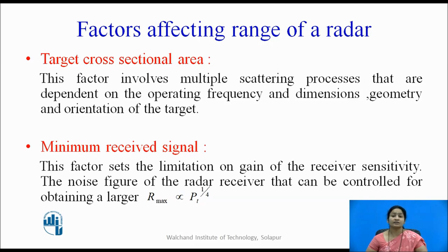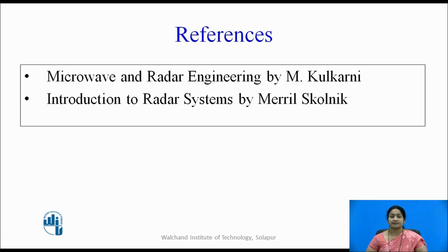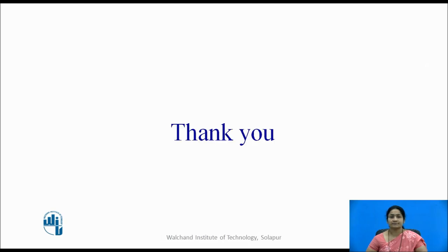As the value of sigma changes based on target shape and size, the range of the target changes accordingly. The last factor is the minimum received signal S_min, which sets limits on the receiver sensitivity. This can be controlled by adjusting the noise figure of the receiver. These are the factors affecting the radar range equation. Thank you!